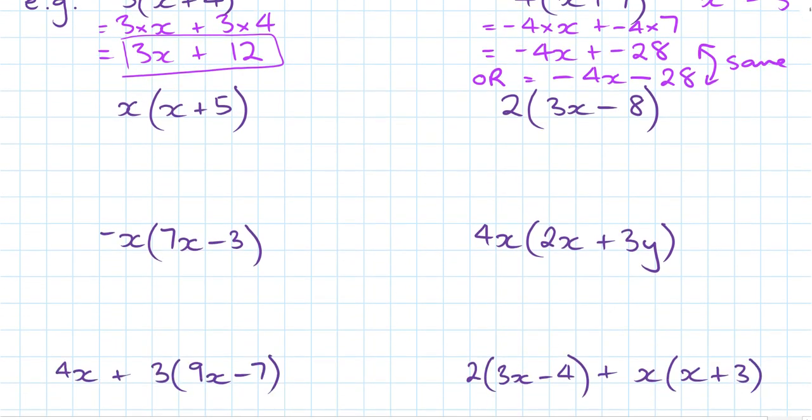A few more examples. x at the front here times (x+5). So expanding out, I get x times x plus x times 5 and then simplifying. Now I don't write x5 here, I write this as 5x.